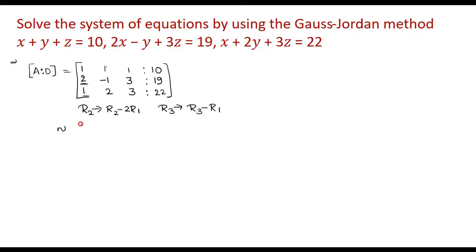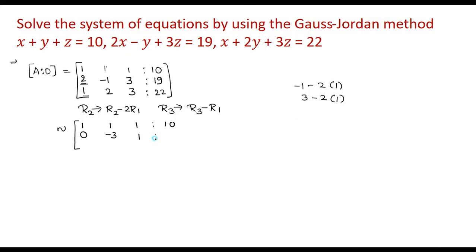There is no change in the first row of the augmented matrix; it remains 1, 1, 1, 10. For R2: it is 0, then minus 1 minus 2 gives minus 3, then 3 minus 2 gives 1, and 19 minus 20 gives minus 1. For R3: 1 minus 1 is 0, then 2 minus 1 is 1, 3 minus 1 is 2, and 22 minus 10 is 12.